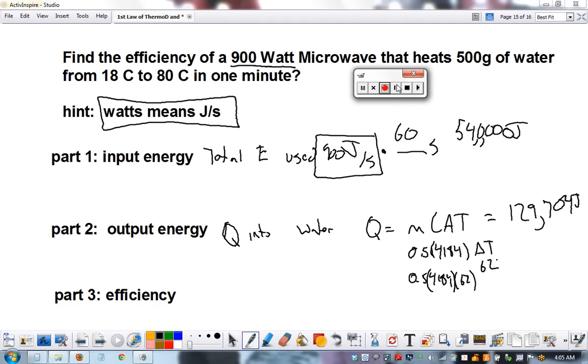I worked this out and it actually made an impossible scenario. The input is 54,000 joules, but the output energy is 129,704 joules. It's almost three times as much energy came out than you put in, and that's impossible. You can't get energy from nothing.